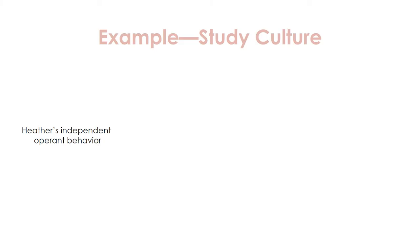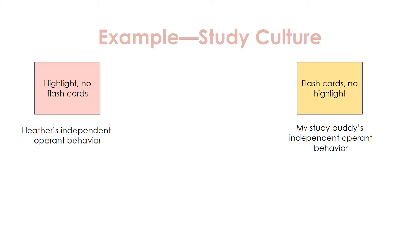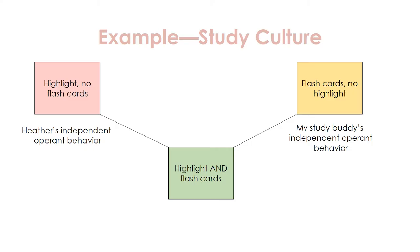Here is an example of creating a study culture. My independent operant behavior is that I use highlighters when I study but do not use flashcards. My study buddy's independent operant behavior is that she uses flashcards but does not use a highlighter. When we get together and study, we come up with using both highlighters and flashcards. The combination of highlighting and flashcards has become our interlocking behavior contingency, as my independent operant of using a highlighter and her independent behavior of using a flashcard have come together.